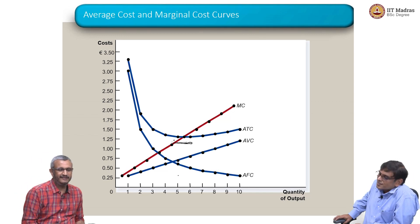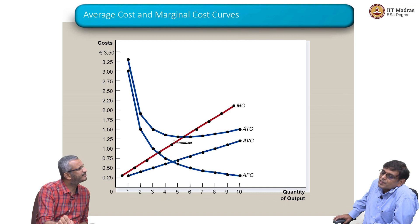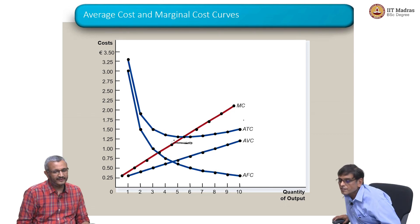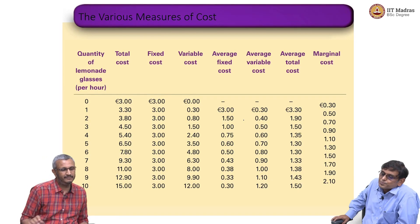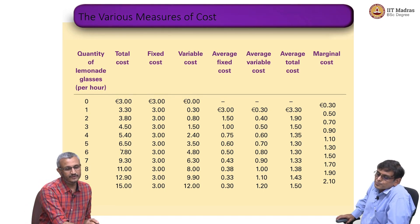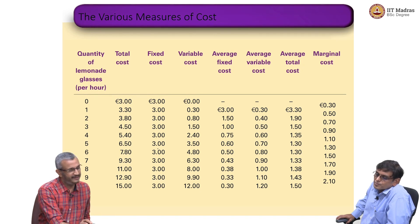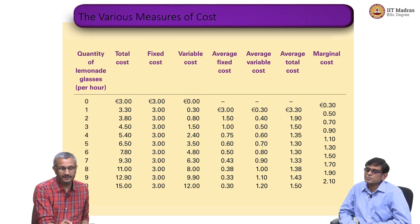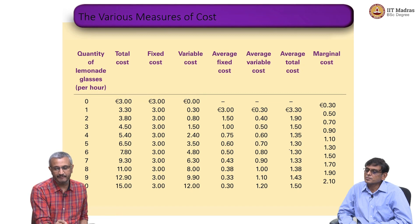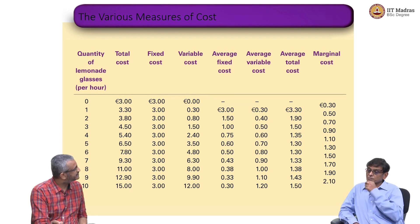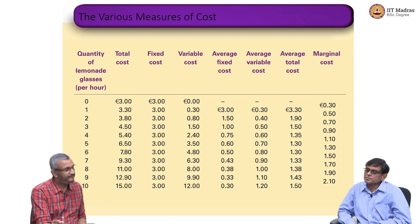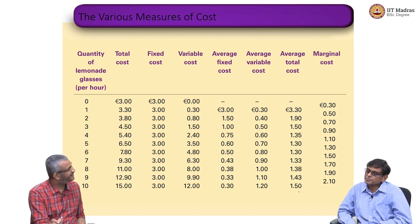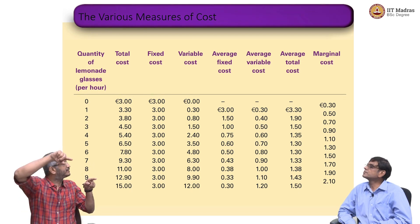In this case, it looks like 4 or 5 units is the optimal region. Here I can take advantage of the falling cost, but if I move beyond this region I will face the rising curve. Going back to the numbers: total cost is 6.5, total fixed cost is 3, variable cost is 3.5, average fixed cost is 0.6, average variable cost is 0.7, and average total cost is 1.3. There is a stable region around 1.3, then it goes to 1.33, 1.38, 1.43 — you are going to the other part of the U.